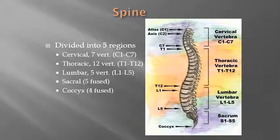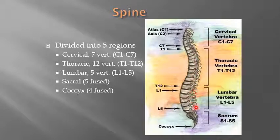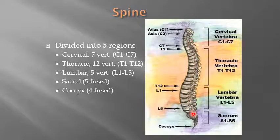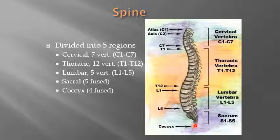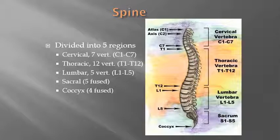Here's the spine and the different regions. You have your cervical vertebrae, that's C1 through C7. You have your 12 thoracic vertebrae, T1 through T12. You have the 5 lumbar vertebrae, L1 through L5. Then you have the sacrum — this is where we get into the fused bones, with five sacral vertebrae fused together. Down at the tailbone, the coccyx, there are four fused bones. You may see some variation in other textbooks ranging from three to five coccygeal vertebrae; we'll go with four for our discussion.